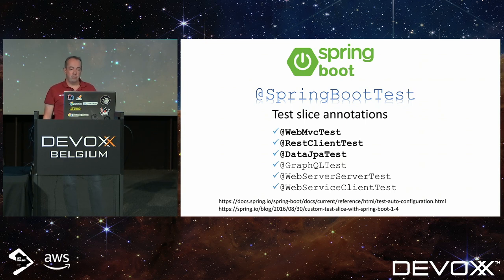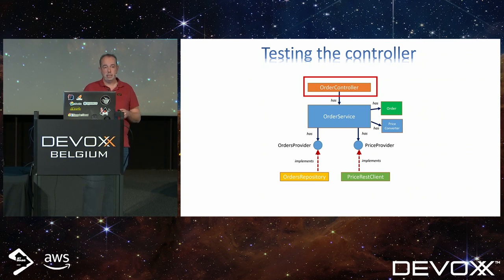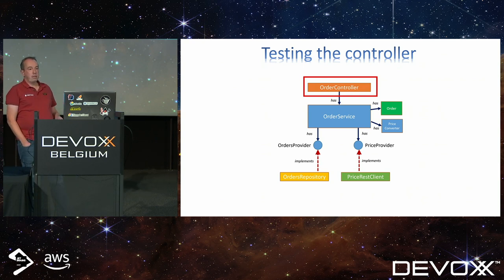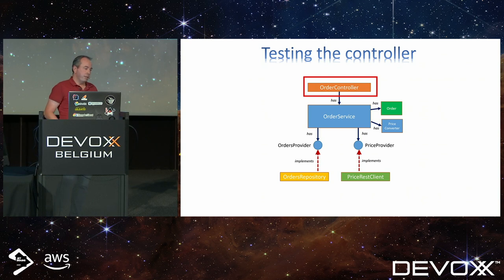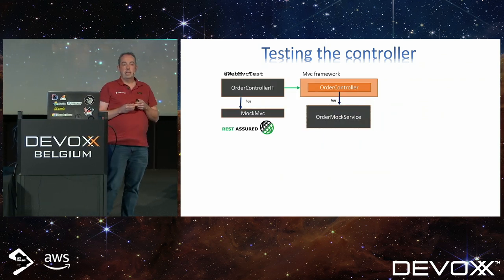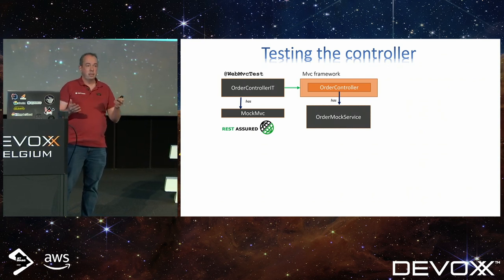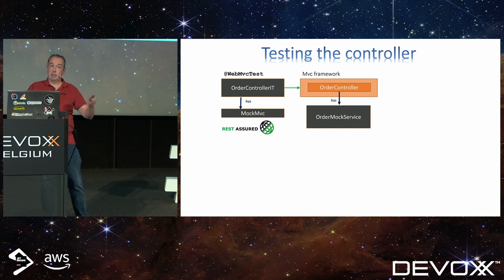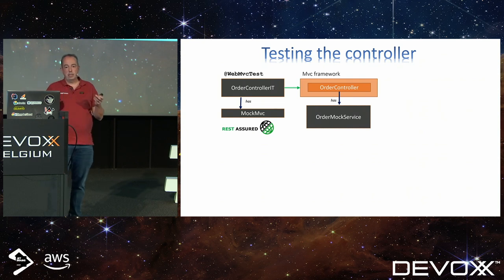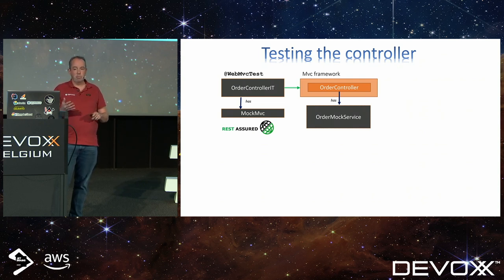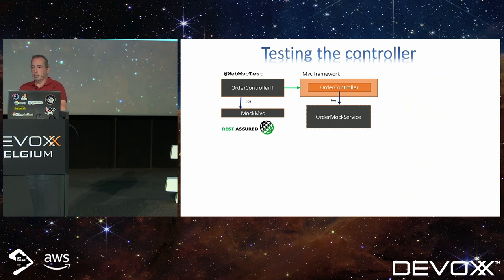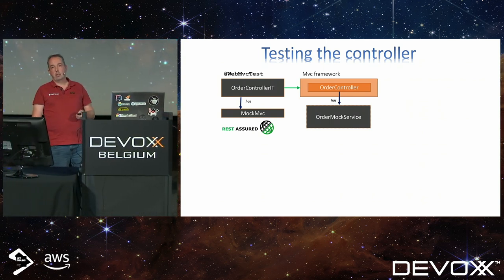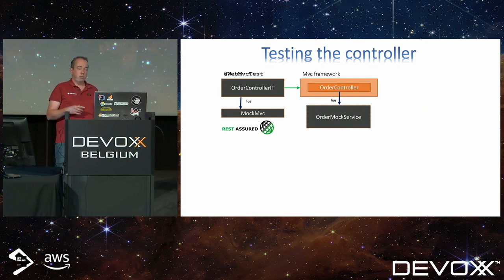I'm going to show you three of these slices and go through them with graphics first, then show you the code. For the order controller, I only need to start up the controller itself and the MVC framework, mock out the service dependency, and write an IT test annotated with @WebMvcTest. Then you can talk to the MVC framework using either MockMvc — which is automatically provided by Spring — or Rest Assured, which I really like.